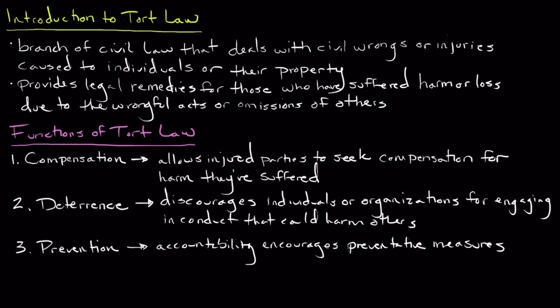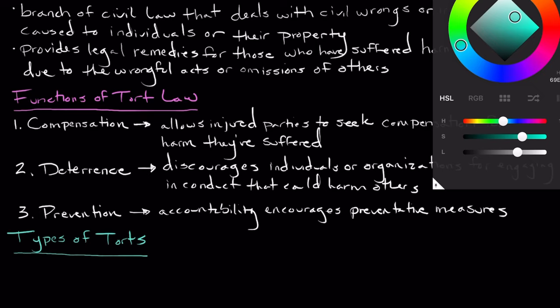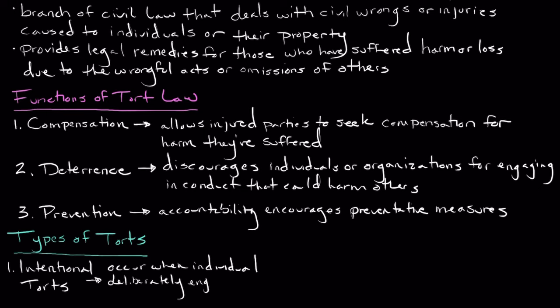Now that we understand some of the different functions of tort law, let's explore some of the different types of torts. Torts can be broadly categorized into three main types. The first type are intentional torts. Intentional torts occur when a person deliberately engages in actions that cause harm to another individual or their property. Some examples of intentional torts include things like assault and battery, defamation, trespassing, and intentional infliction of emotional distress.